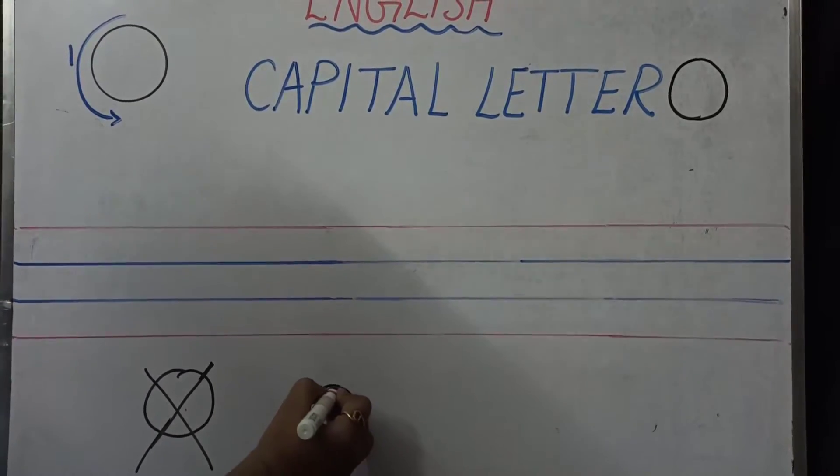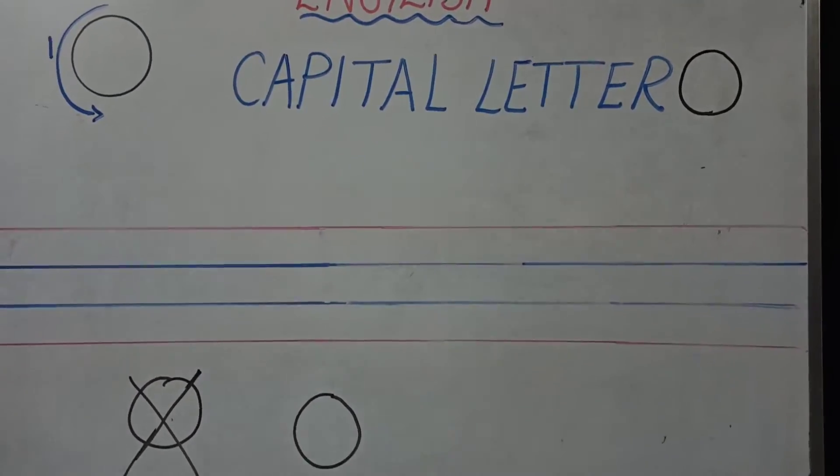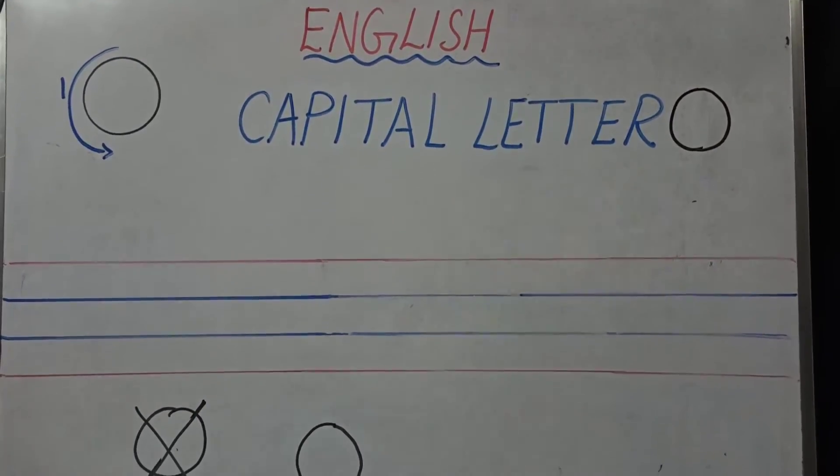And make a circle and stop again at the same point. What is this letter called? Capital letter O. What is this letter called? Capital letter O.